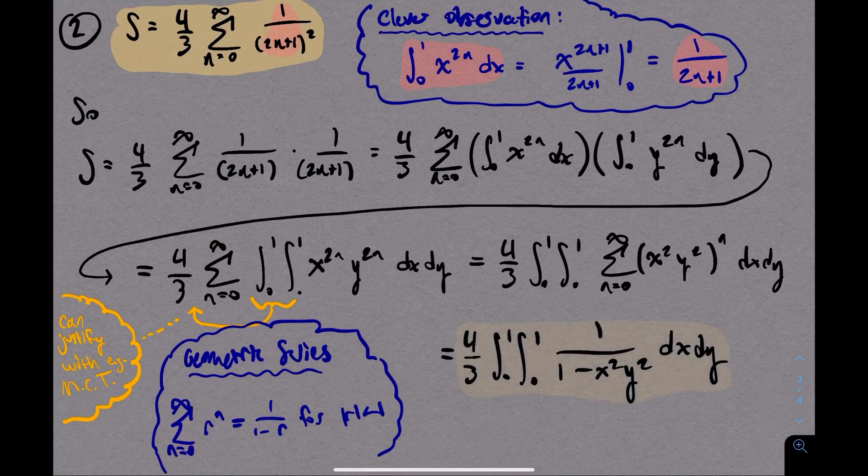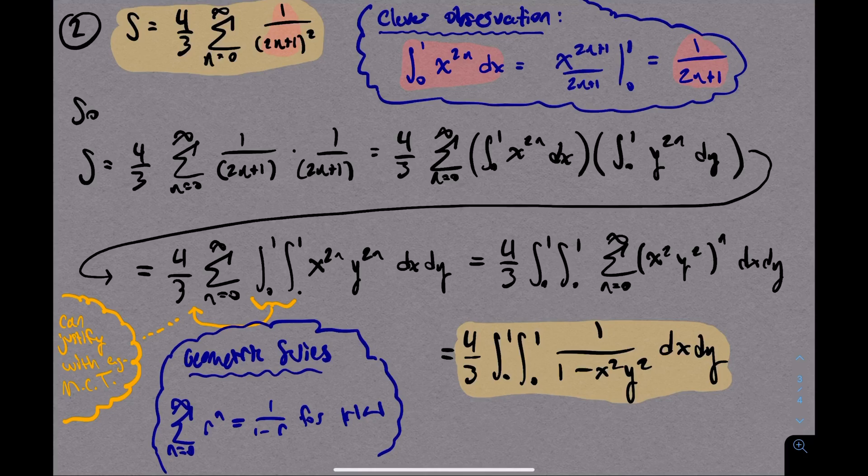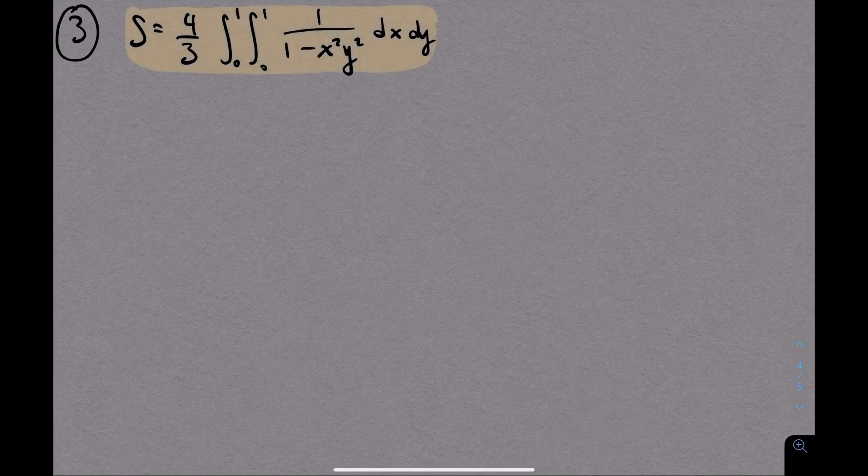And with that, we've successfully turned this original sum that we care about into a double integral. I find this step alone really cool. We're finally in the territory of multivariable calculus, and we have a simple-looking double integral to evaluate.